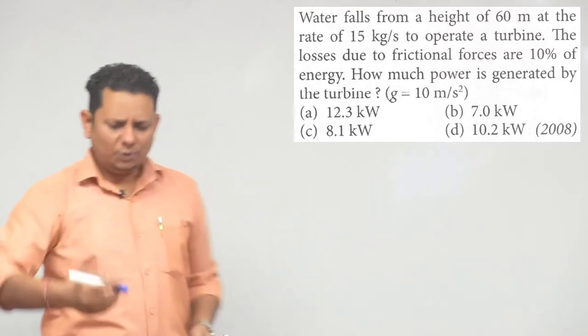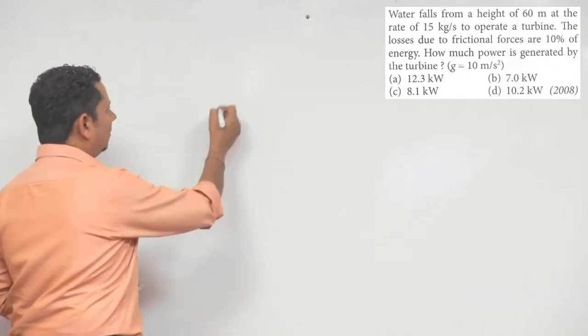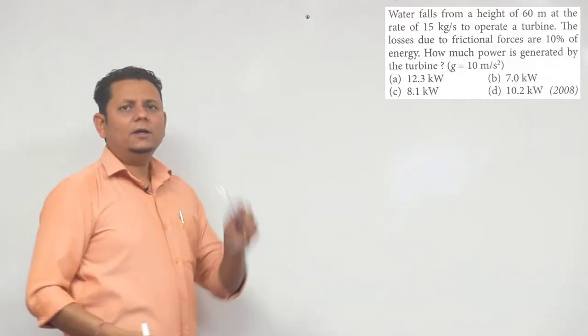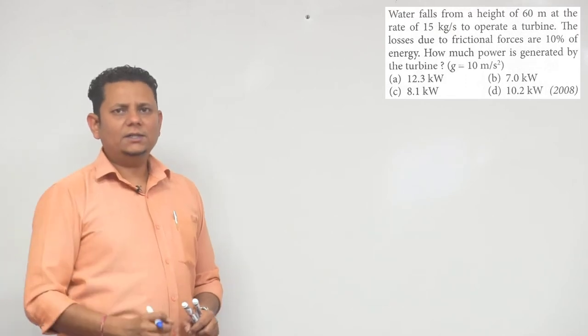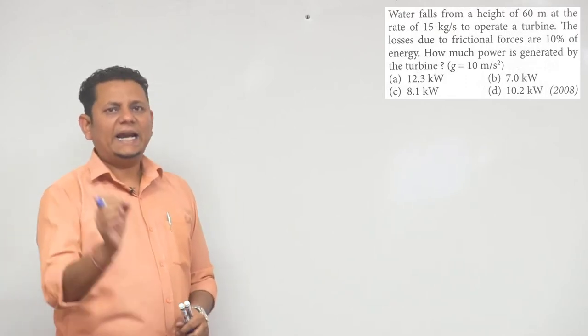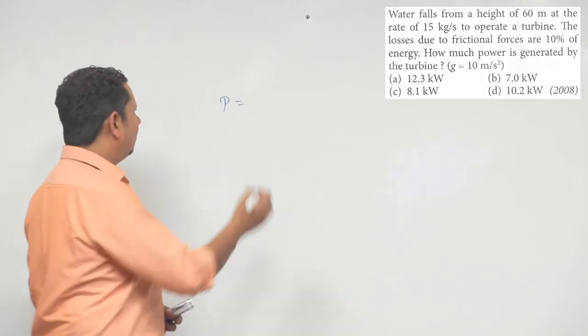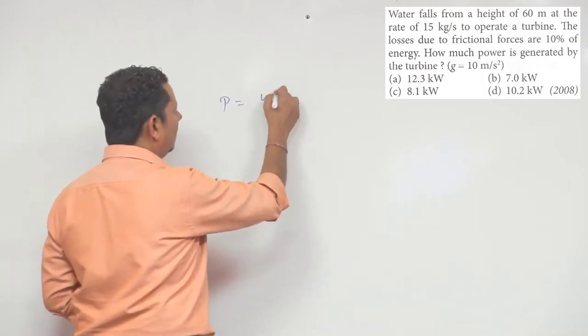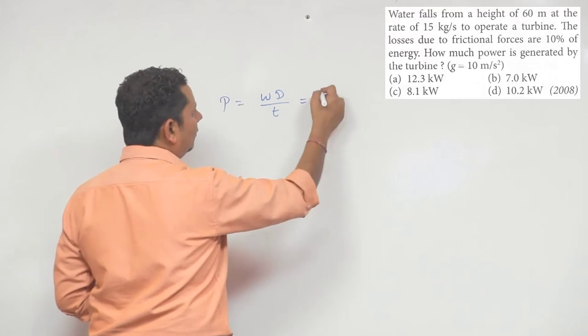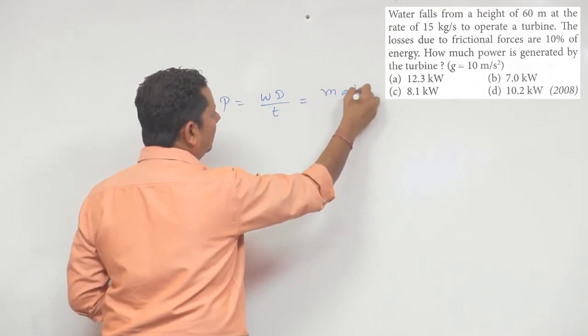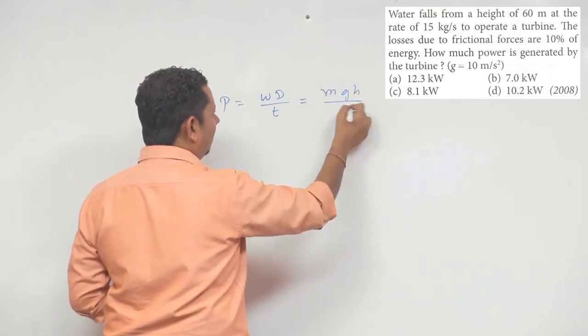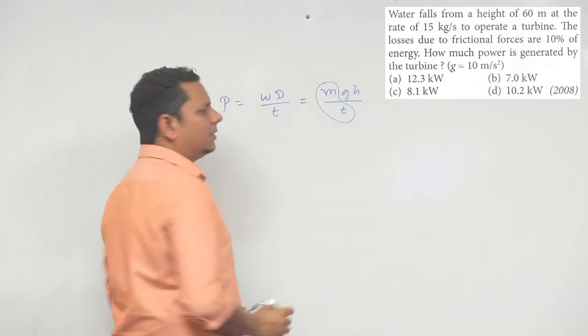This is a straightforward turbine problem. Water falls and the energy is converted with 10 percent loss, meaning 90 percent efficiency. So here we can write power as work done divided by time taken.